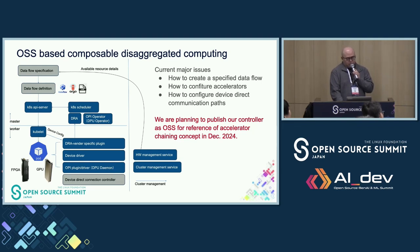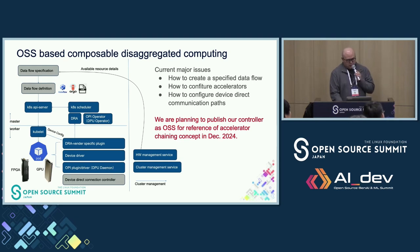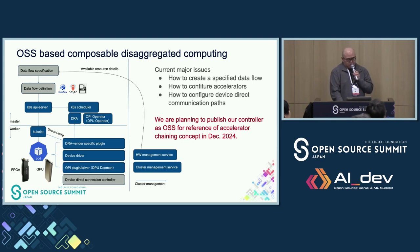This slide shows the architecture of OSS-based composable disaggregated computing. The dark blue boxes are elements that already exist, but we think their features need to be expanded to realize our concept. The current major issues are: how to create a specified data flow, how to configure accelerators, and how to configure device direct connection paths. We are planning to release our controller as OSS for reference of the accelerator chaining concept in December 2024, and we'd like to discuss our concept in various OSS communities.